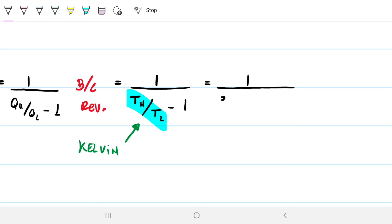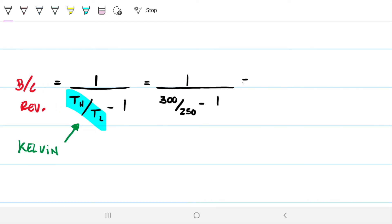So we have our hot reservoir at 300, we have our cold one at 250. This is both Kelvin and Kelvin, so they go away. This is 1, and this gives me 5. So the coefficient of performance of this refrigerator is 5.